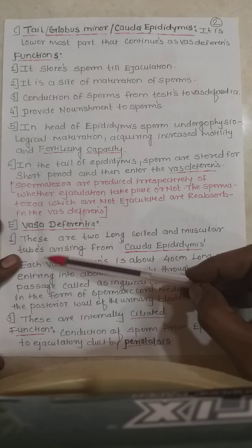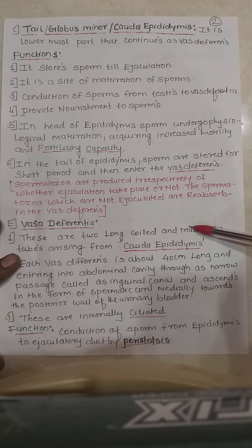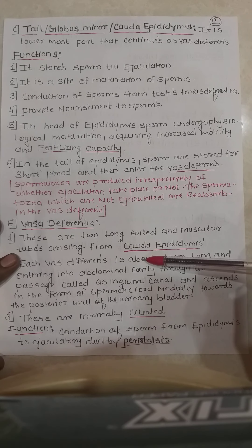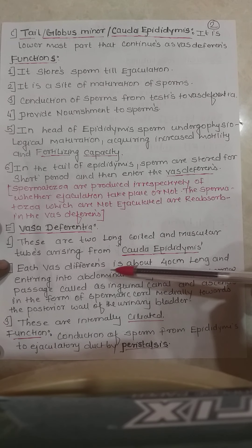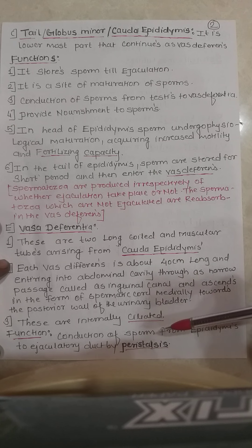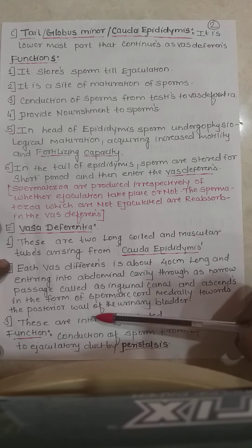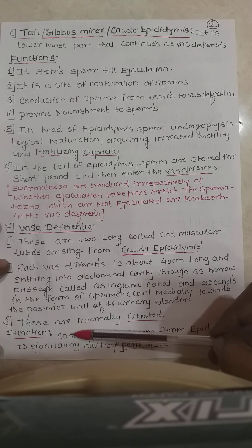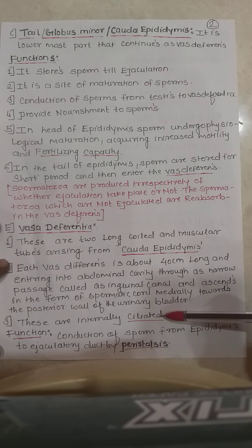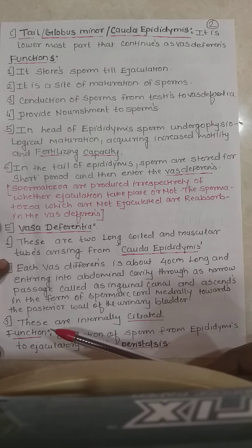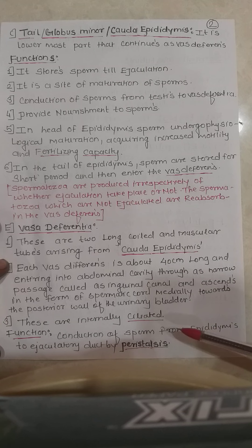Vasa differentia are two long, coiled, and muscular tubes arising from the cauda epididymis. Each vas deferens is about 40 cm long, entering the abdominal cavity through a narrow passage called the inguinal canal, and ascends as part of the spermatic cord medially towards the posterior wall of the urinary bladder. They are internally lined by ciliated epithelium. Their function is conduction of sperm from the epididymis to the ejaculatory duct by peristalsis.